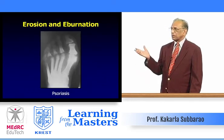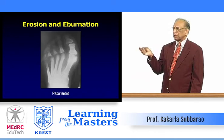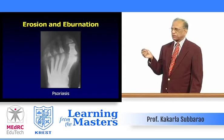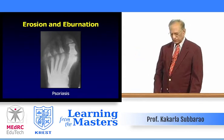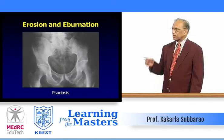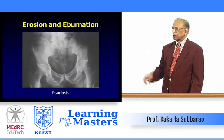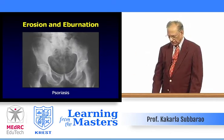Another example of erosion and eburnation: almost absorption of the proximal articular margins of the phalanges, with associated sclerosis. Psoriasis again shows erosion and eburnation — a combination of both. It is bilateral but not symmetrical.